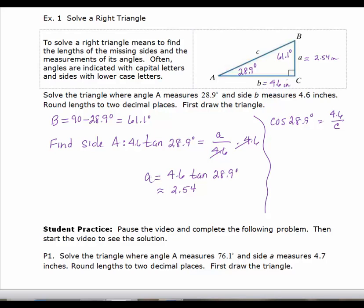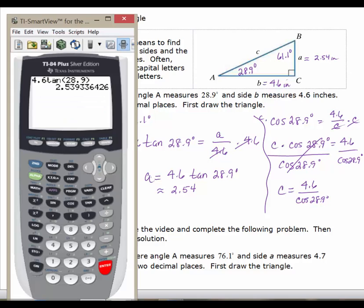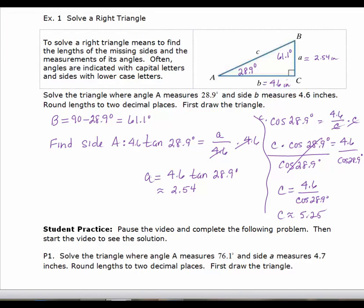Multiplying both sides by C, I get C times the cosine of 28.9 equals 4.6. Dividing each side by the cosine of 28.9, C equals 4.6 divided by the cosine of 28.9. We'll evaluate that in our calculator. My answer is approximately 5.25. So with C approximately equal to 5.25, we've solved the triangle.